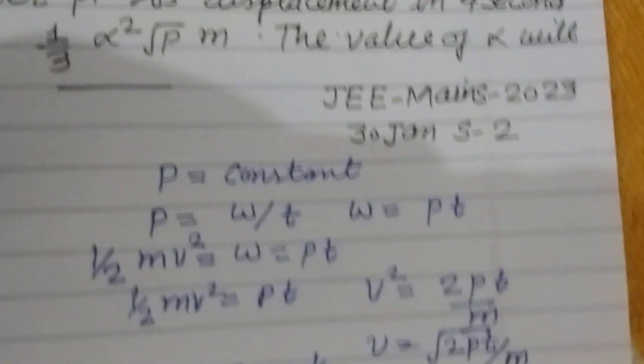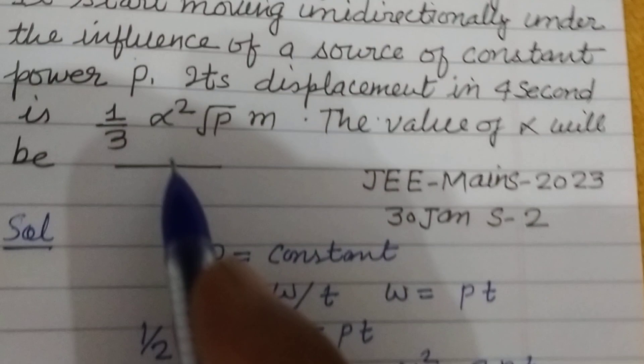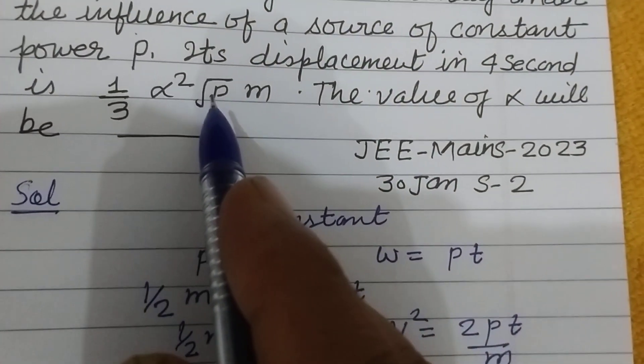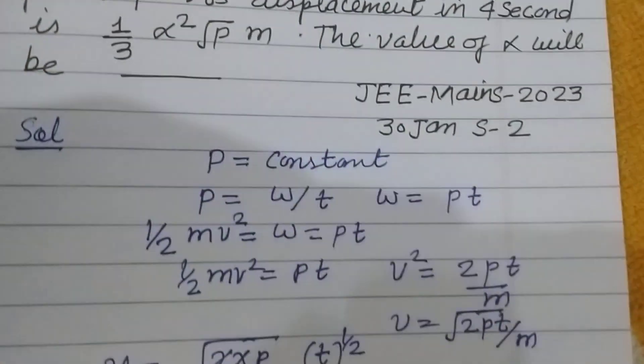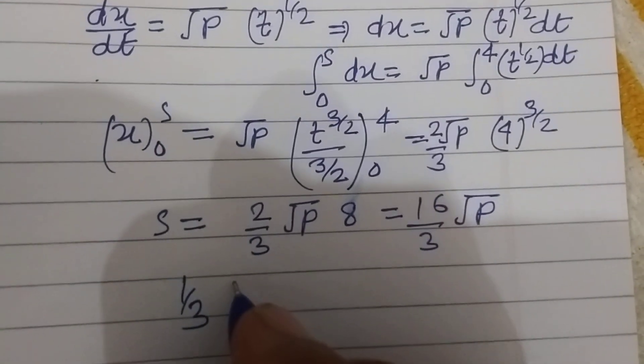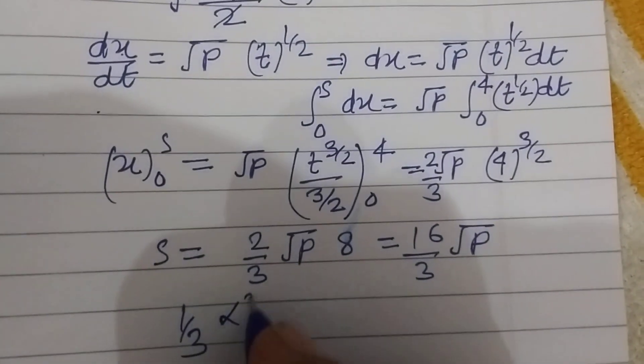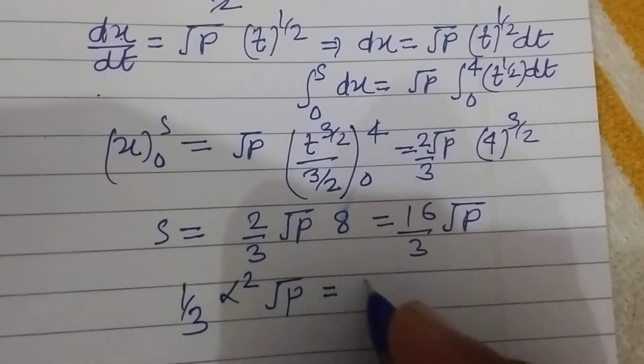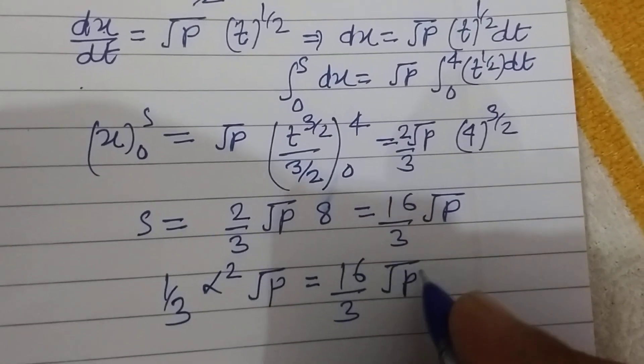And this displacement is given to us as 1/3 alpha squared square root P. So 1/3 alpha squared square root P equals 16/3 square root P.